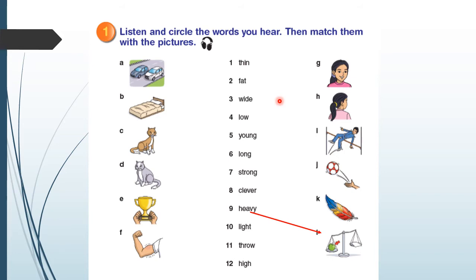Finish? Good. Now, let's match them together and you can check your answers with me. Number one, thin with C. The brown cat is thin. Number two, fat with D. The gray cat is fat. Number three, wide with A. The road is wide. Number four, low. The bed is low.